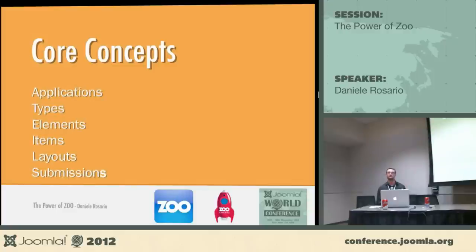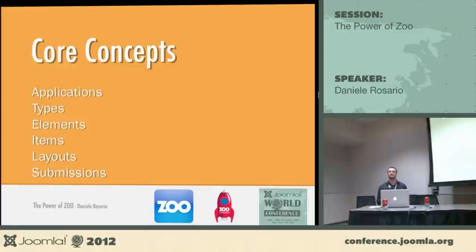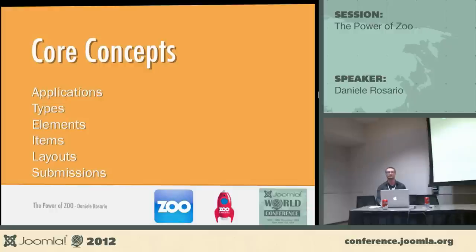The basics of Zoo: there are applications, types, elements, layouts, items, and submissions. The important ones are the first five. Submission is just the front-end editing feature of Zoo that uses the items and the rest. I'll go through each one and explain how Zoo is so powerful because of this concept.